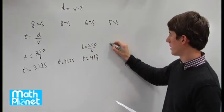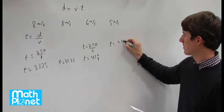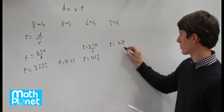Same formula again: time equals 250 meters divided by 5 meters per second.